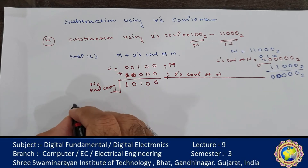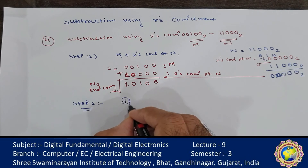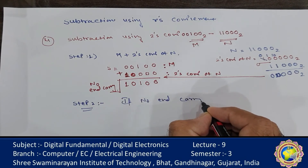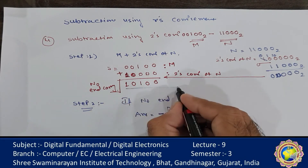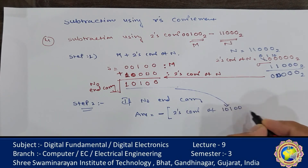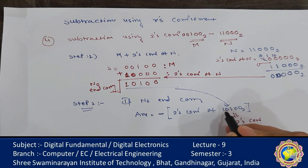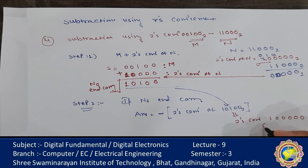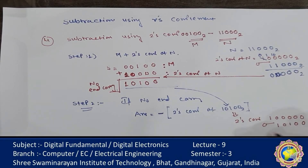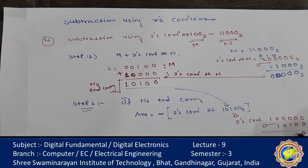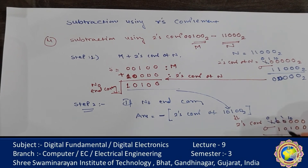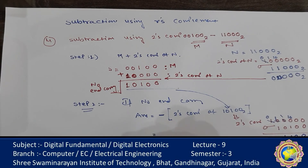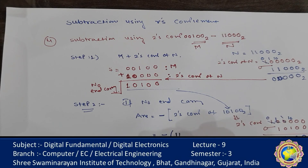Since there is no end carry, the answer is negative. We take the 2's complement of the step 1 result (101100 binary): 2^5 minus 101100 — performing the binary subtraction gives 010100... computing properly yields 2's complement = 110000. Wait — the step 1 result is 101100; 2's complement of 101100 = 010100. Therefore the answer is minus 11000 binary.